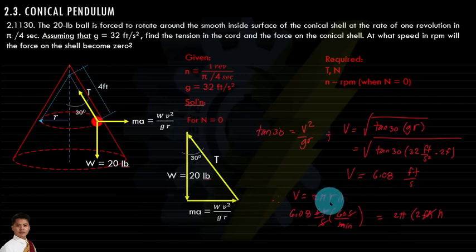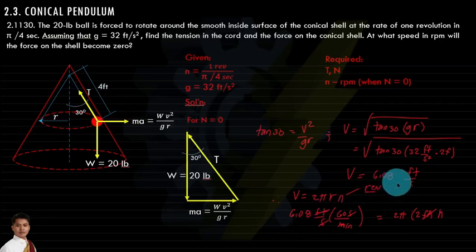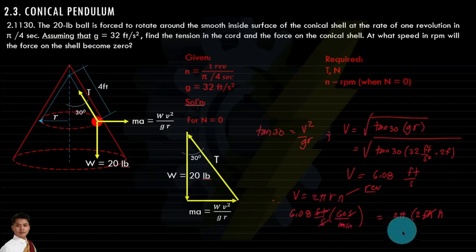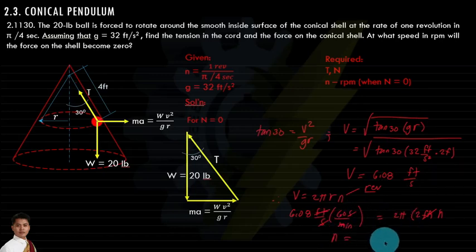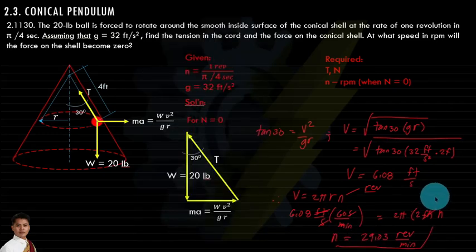Using v = 2π·r·n, note that n will come out in revolutions per second since v is in ft/s. Converting seconds to minutes gives n = 29.03 rpm. That concludes this video — thank you for watching.